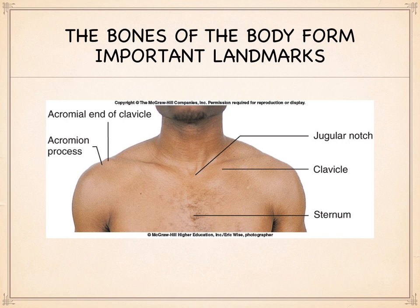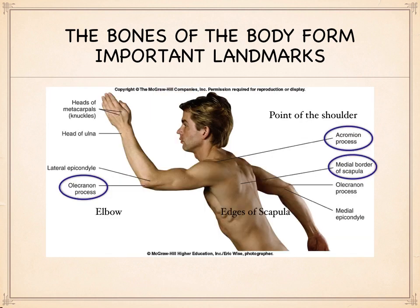Out at the point of the shoulder, the acromion process is the bony point of the shoulder. No matter how much muscle is there, the shoulder muscles attach to that point. You can always palpate a bony feature right at the tip of the shoulder, called the acromion process. And as you move down the arm at the elbow, there are a number of bony features there. You can palpate the edges of your scapula on your back, and there are bony landmarks throughout your hand and on either side of the wrist.